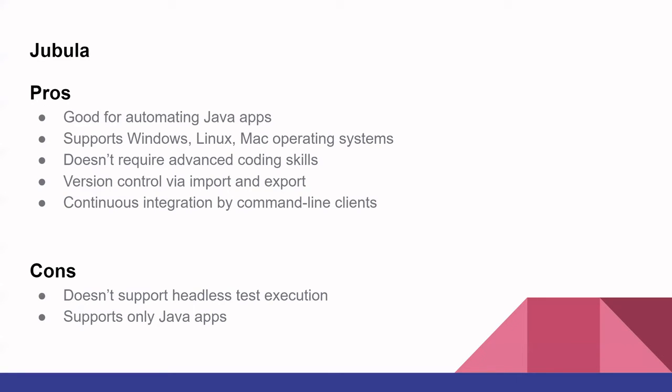Fourth in our list is Jubula. Need to test desktop Java applications? Jubula is an open source tool for automating UI test design specifically for Java applications. It is also reasonably well known in the Eclipse community. It provides automated functional GUI testing for various types of applications. It is aimed at teams who want their automated tests to be written by test experts from the user perspective without requiring any coding effort. Jubula tests incorporate best practices from software development to ensure the long-term maintainability of automated tests.